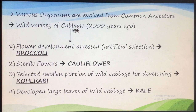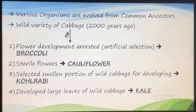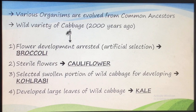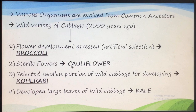First, if flower development is arrested in the wild cabbage — by artificially spraying certain hormones so that flower development does not happen — then a different variety is produced known as broccoli, which is very popular nowadays because it is very nutritious. Similarly, if the flowers in the wild cabbage are made sterile by spraying certain chemicals or hormones, then there is development of cauliflower. In cauliflower, the flowers are sterile flowers.